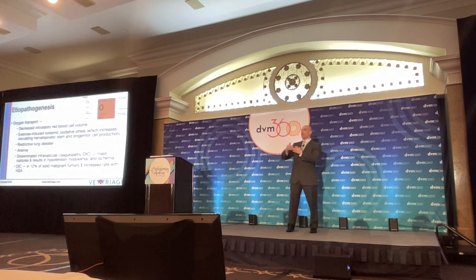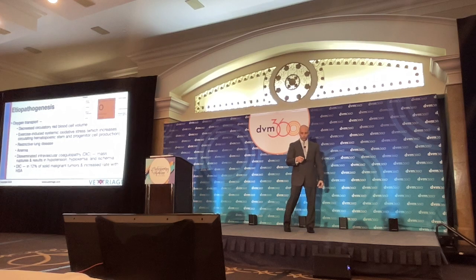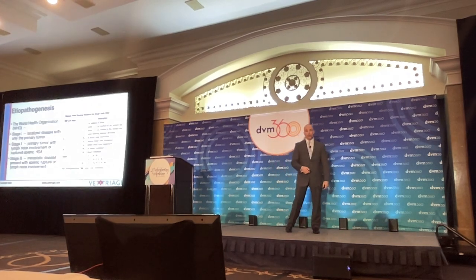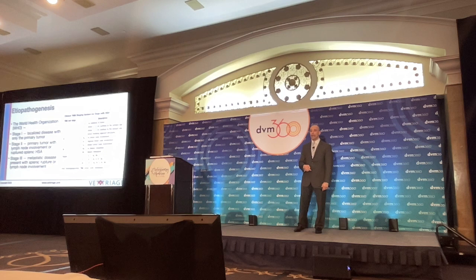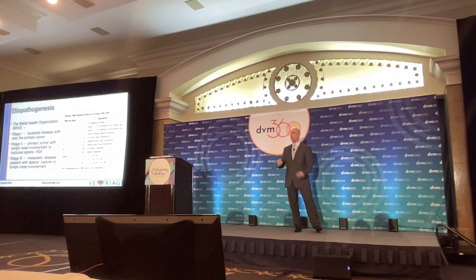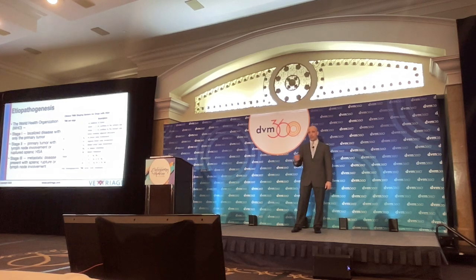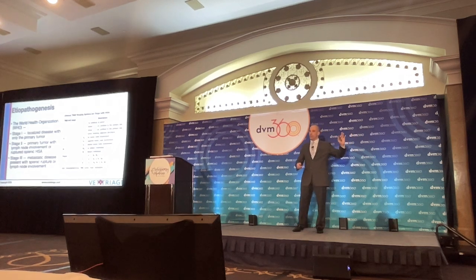Not every thrombocytopenia is equal. If it's not below that 20,000–30,000 mark, maybe it's something to be concerned about, but you have to take that information and compare it to the remainder of the case. You can characterize neoplastic disease generally based on stages, which plays a role in prognosis. Stage one is localized disease — just the splenic tumor. Stage two is the splenic tumor with possible lymph node involvement or the tumor has ruptured. Stage three is metastatic disease. These stages play a role in prognosis and client communication.